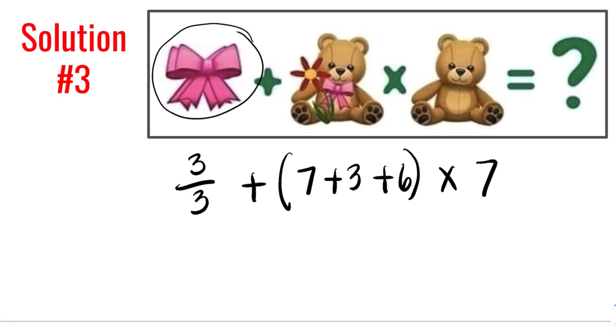This could be represented as 3 over 3, because based on the picture, a ribbon is over another ribbon. So that is 3 over 3. We just have added the argument, right? 3 divided by 3.